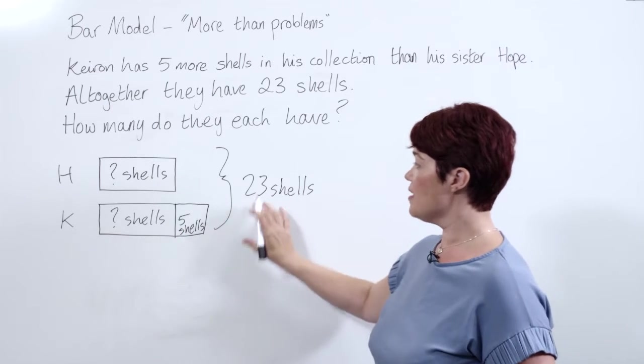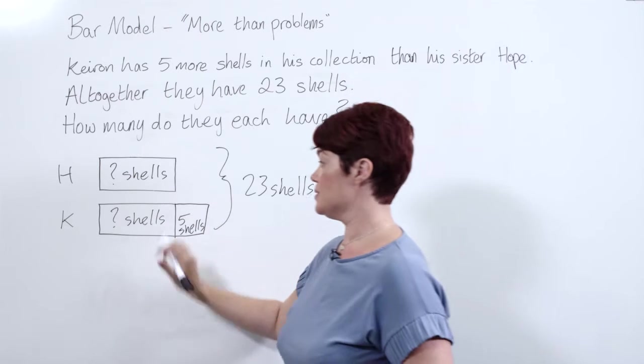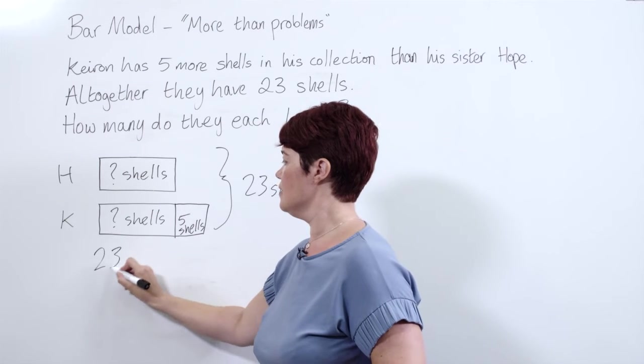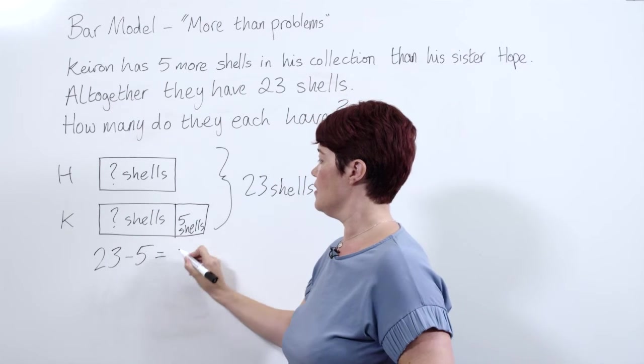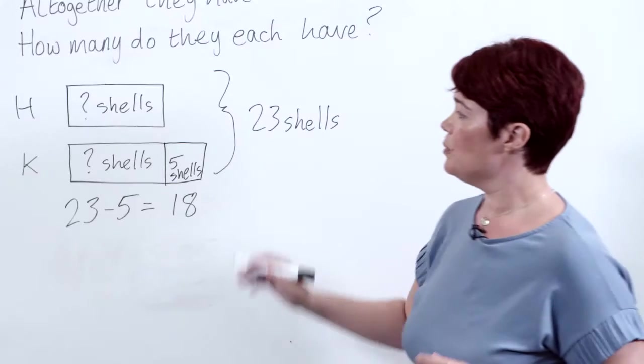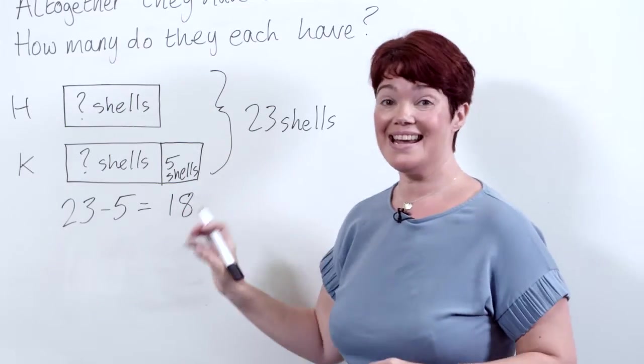We can now remove the five from the 23 to find out what's left. So 23 take away 5 equals 18. So we know these two bars here must make 18 shells.